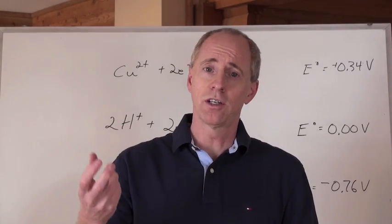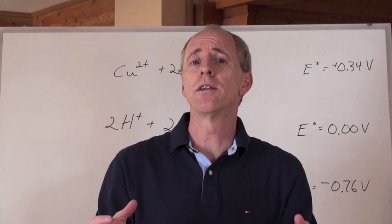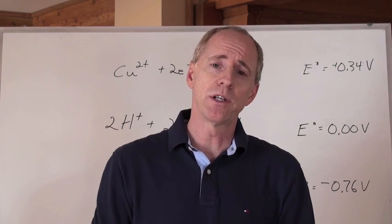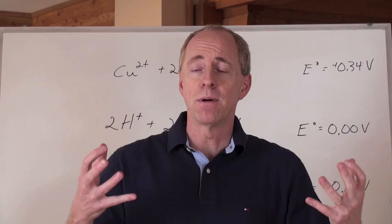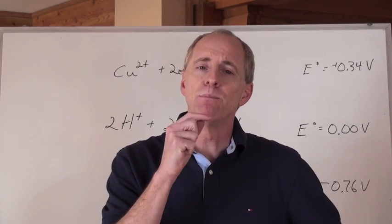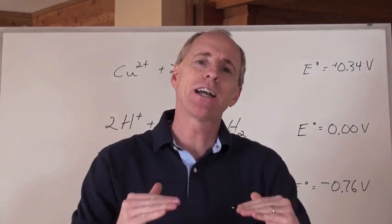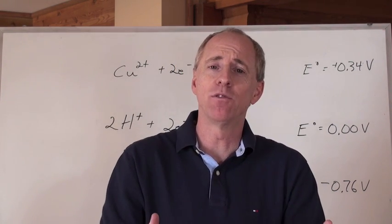If you have something that wants to lose electrons and something that wants to gain electrons, you stick a meter in between the electron transfer, you can actually record a voltage for that, which is called a potential difference for that reaction. But the thing is, half reactions themselves, you can't plug a meter into a half reaction and get a voltage.